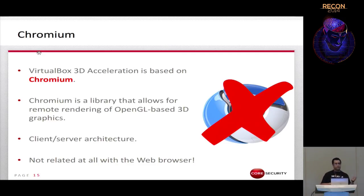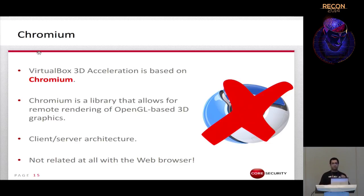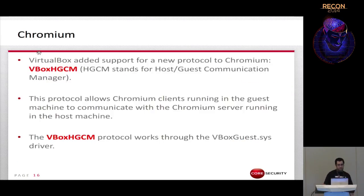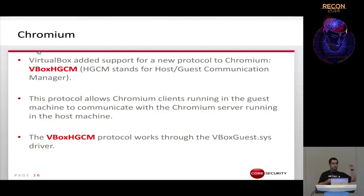On the client side, Chromium replaces the native OpenGL libraries with its own interception library, which captures all calls to OpenGL functions and converts them to a serialized form — a stream of Chromium rendering commands, which is a bytecode composed of opcodes plus data. Those rendering commands are sent from the Chromium client inside the VM to the Chromium server on the host over the bbox HGCM protocol, which stands for Host to Guest Communication Manager.